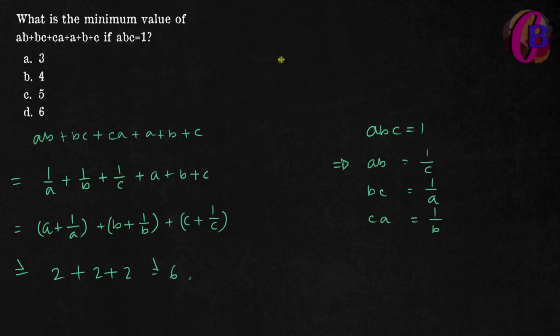The AM-GM inequality states that (x + y)/2 is greater than or equal to the square root of xy. For instance, the square root of a times 1/a equals 1, so a plus 1/a is at least 2.